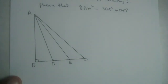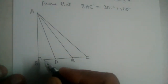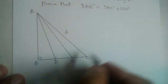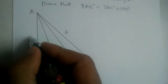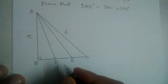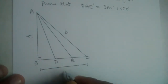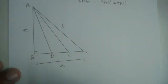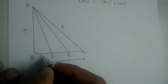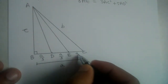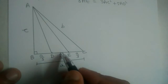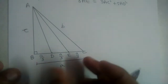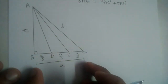Let us solve this problem using an easy method. Let us take the side opposite to vertex B as small b, opposite to vertex C as small c, and opposite to vertex A as small a. Since D and E trisect BC, BD, DE, and EC are each equal to a/3, because a/3 + a/3 + a/3 = a. So BC = a.